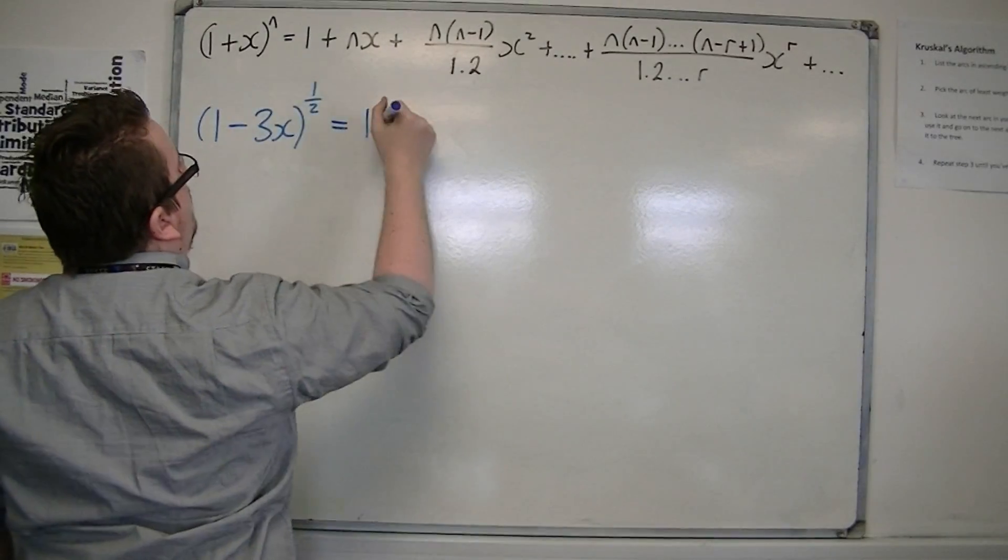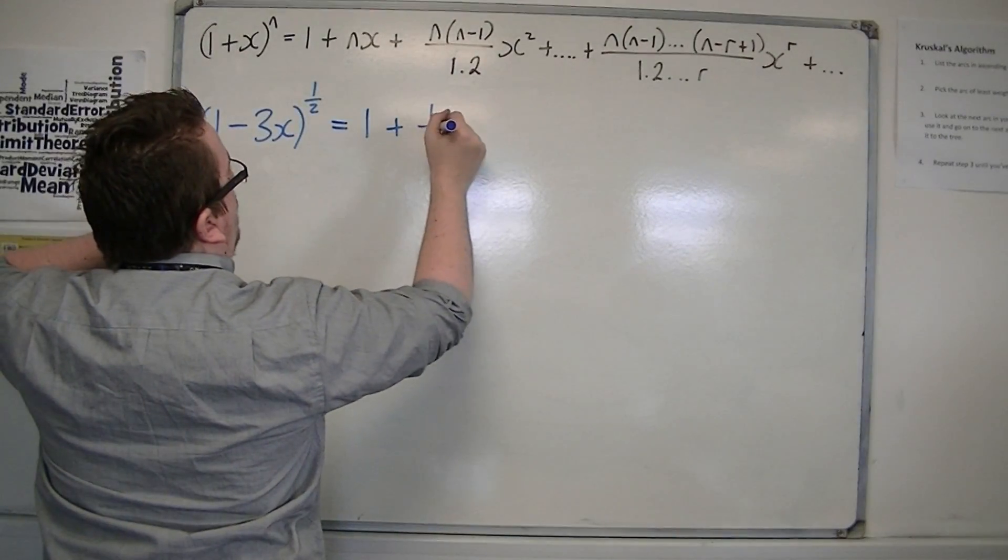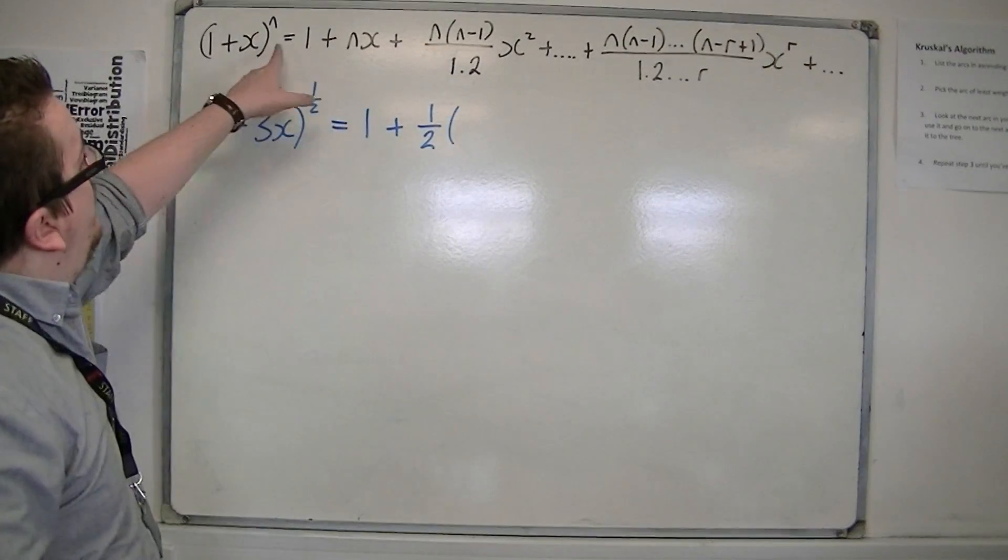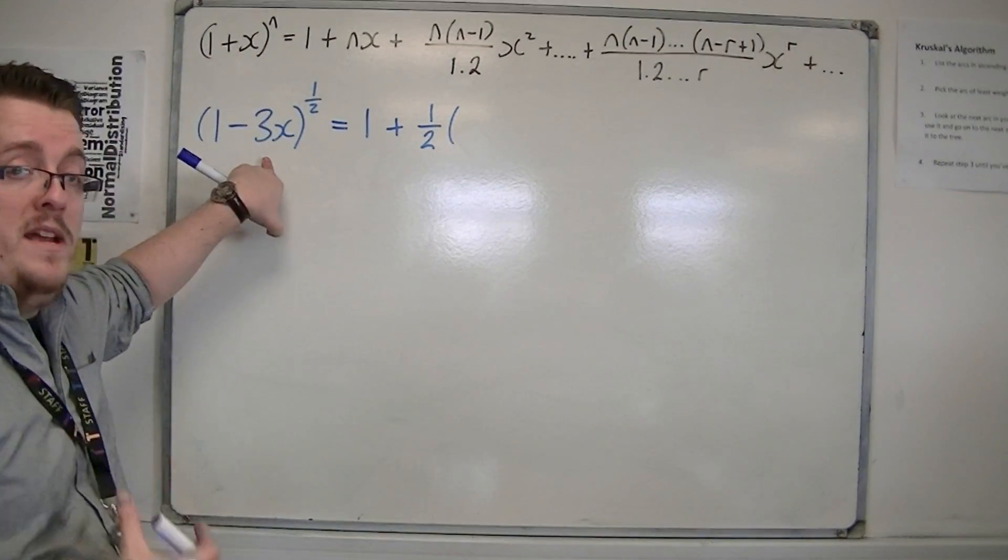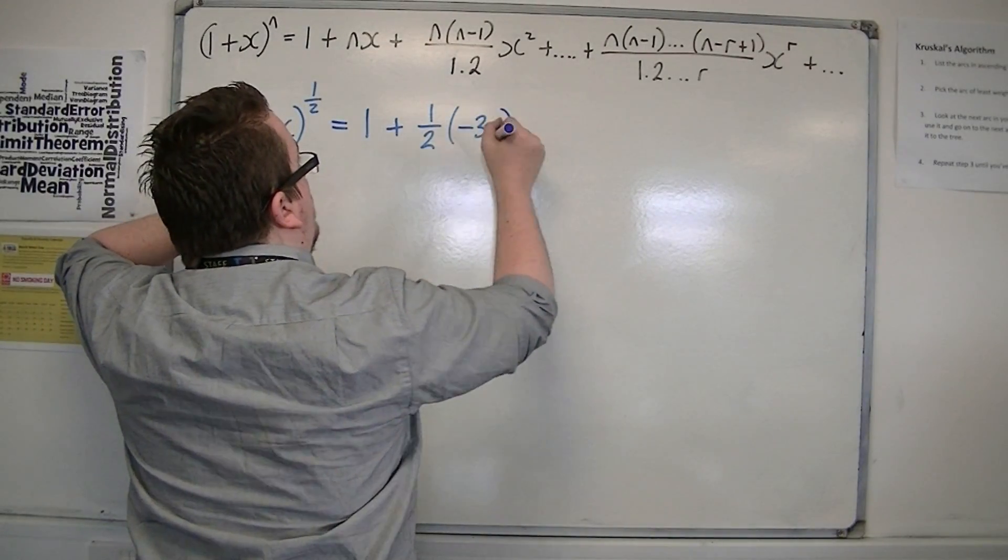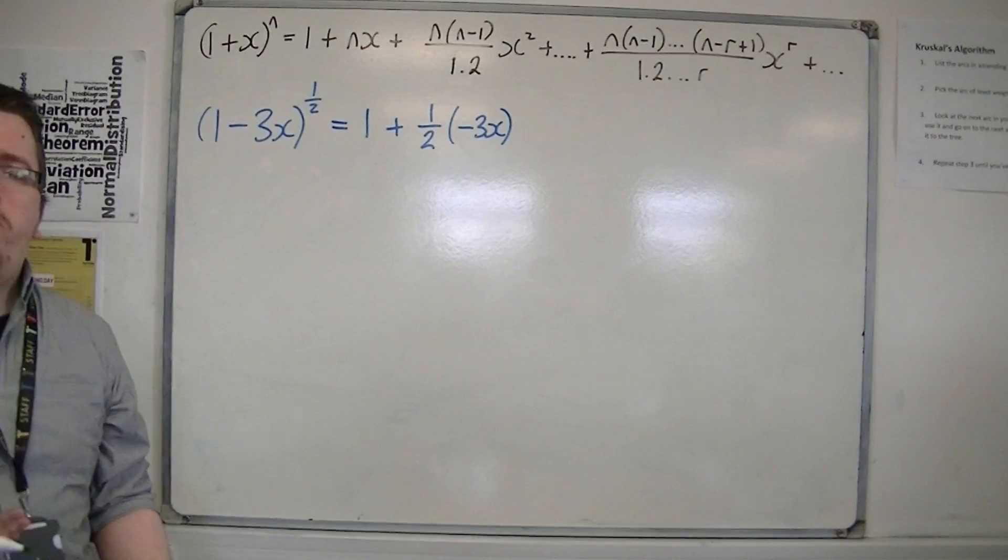We're going to have 1 + n, so 1/2, times x. Now x isn't just x that I have there, x is actually now -3x. So you replace each of the x's with -3x, and make sure you use a bracket.